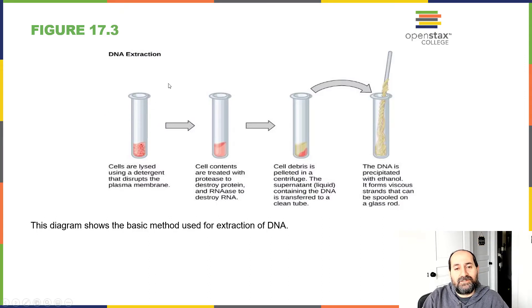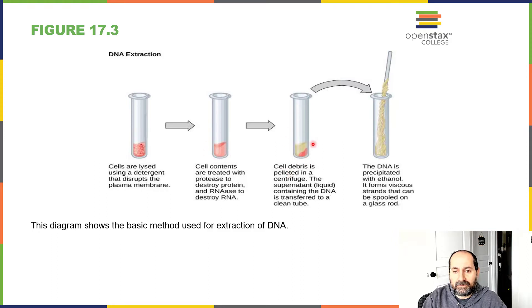Another technique that's commonly used is DNA extraction. We could take cells in a test tube and lyse the cells with a detergent — lysing means breaking open the cells. Then the cell contents are treated with protease, an enzyme that breaks down proteins, and also with RNase, an enzyme that destroys RNA. We then take the cell debris and make it into a pellet, transfer the supernatant — the liquid on top — which should contain DNA to another tube, and the DNA is then precipitated with ethanol.